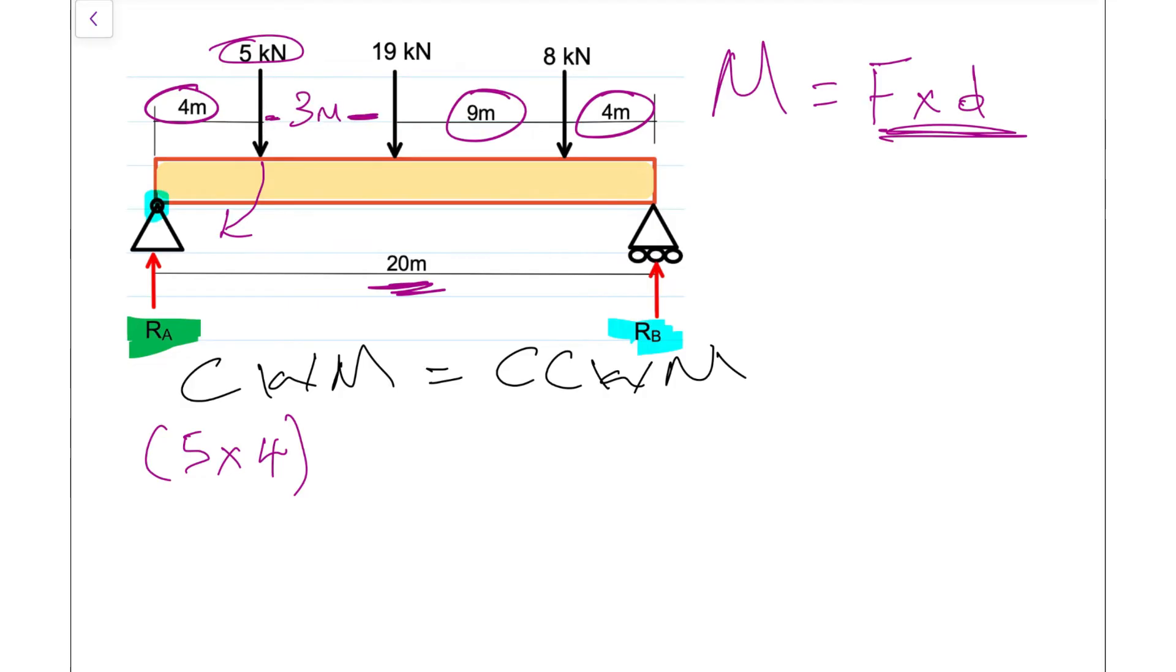With that known value, we can do our calculation. It would be 19 multiplied by the distance from R_A, which is our 4 meters plus 3 meters, so that's 19 times 7. Again, it's on the clockwise moment side because this force will be trying to rotate in a clockwise motion. Moving across to that 8 kilonewtons, still trying to rotate clockwise motion, its distance from R_A is 16 meters, so we have 8 times 16.